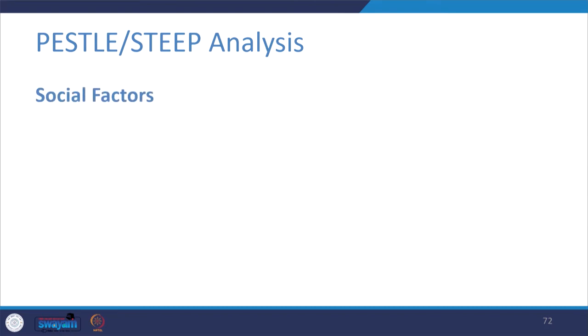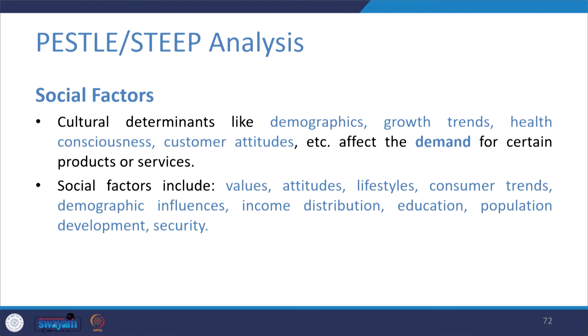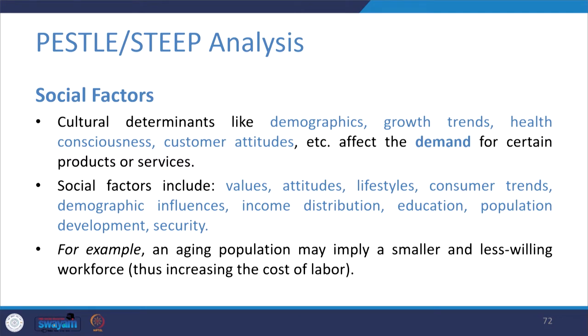Social factors such as cultural determinants — demographics, growth rates, health consciousness, and customer attitudes — affect the demand for certain products or services. For example, during the recent pandemic, customer attitudes towards insurance products largely changed. The COVID pandemic fundamentally changed the way consumers look at products and services. Social factors also include social values, lifestyles, consumer trends, demographic influences on income distribution and education, and security. For example, an aging population may imply a smaller and less willing workforce, increasing the cost of labor to operate in that territory.